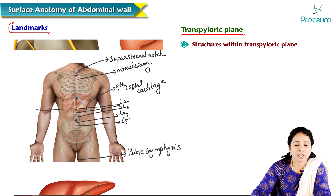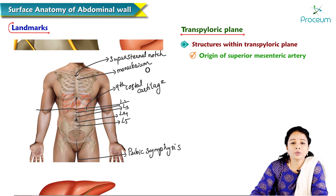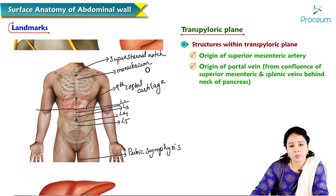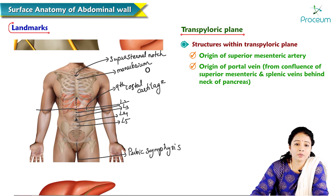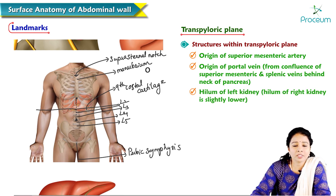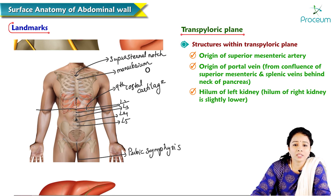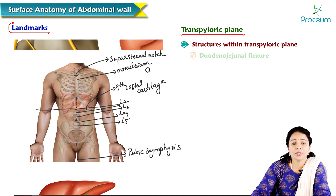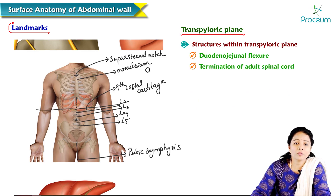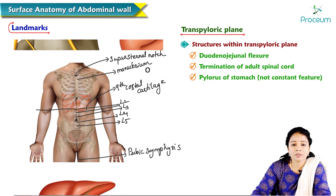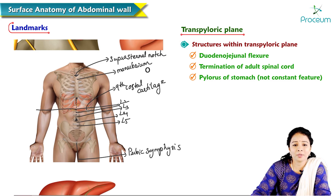The transpyloric plane is the key plane of the abdomen as it corresponds to numerous abdominal viscera. Structures lying approximately within it include: origin of the superior mesenteric artery; origin of the portal vein from the confluence of the superior mesenteric and splenic veins behind the neck of the pancreas; hilum of the left kidney (the right kidney's hilum is slightly lower); origin of the renal arteries; duodenojejunal flexure; termination of the adult spinal cord; and the pylorus of the stomach, though this last is not a constant feature.